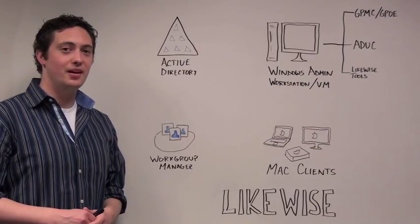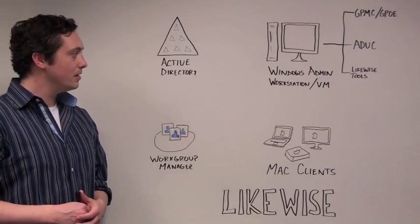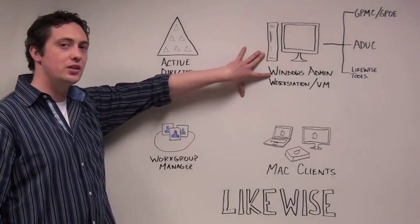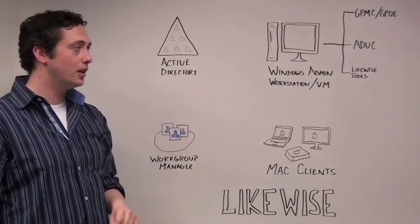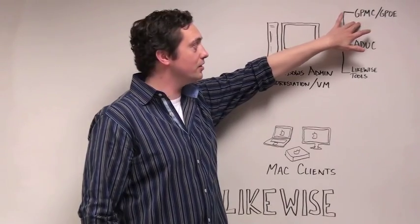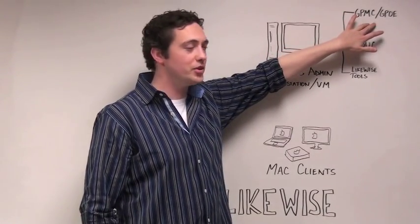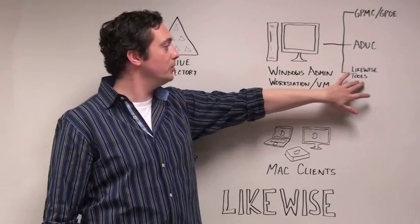The third solution I'd like to show you today is Likewise. Likewise does things different. You'll still have a Windows Administration workstation, but it can be a virtual machine running on one of your Macs if you'd like. You'll have access to the Group Policy Management Console and the Group Policy Object Editor on that machine, access to ADUC, and you're going to have installed the Likewise Enterprise tools.